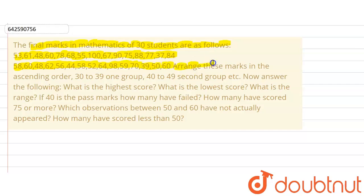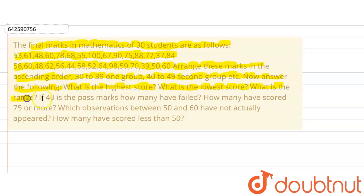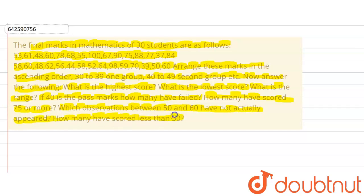Arrange these marks in ascending order: 30 to 39 as the first group, 40 to 49 as the second group, and so on. Then answer the following: what is the highest score, what is the lowest score, what is the range, if 40 is the pass mark how many have failed, how many have scored 75 or more, which observations between 50 and 60 have not actually appeared, and how many have scored less than 50.